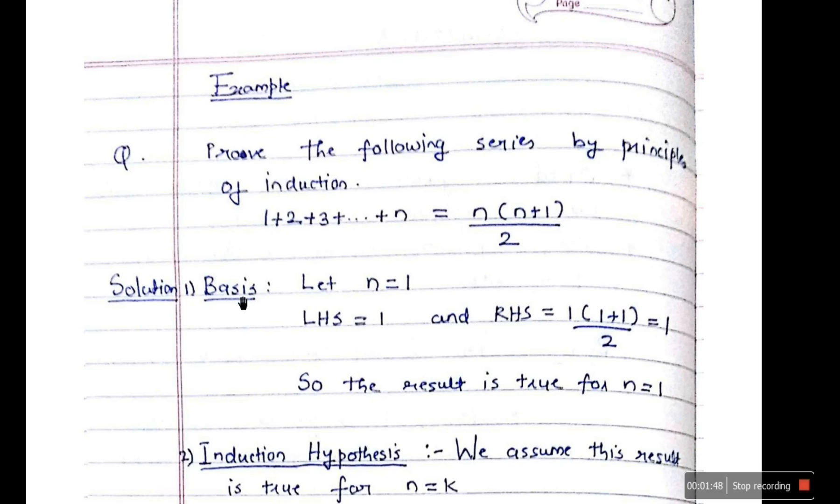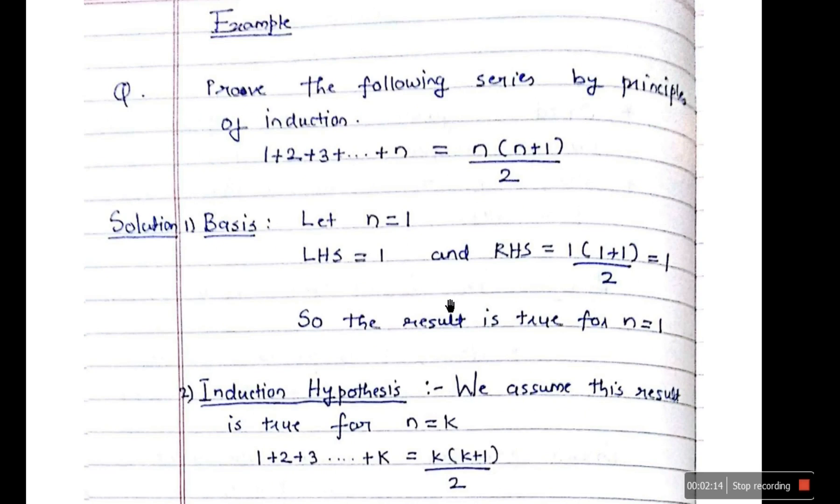So first step is called basis, where we take n equal to 1. Now let's say we substitute the value of 1 over here. So 1 means only 1 value will be there. So LHS it is only 1 and RHS will be 1. So you replace n with 1, so 1 into 1 plus 1 divided by 2. So that is 2 by 2 which is equal to 1. So LHS equal to RHS, proved. So the result is true for n equal to 1. First step is done.